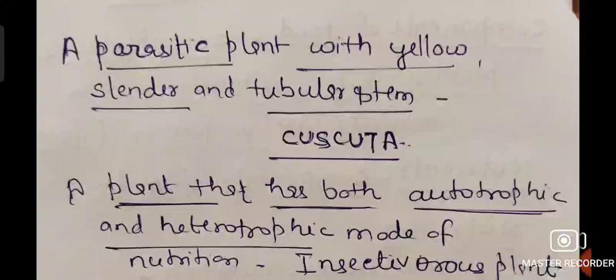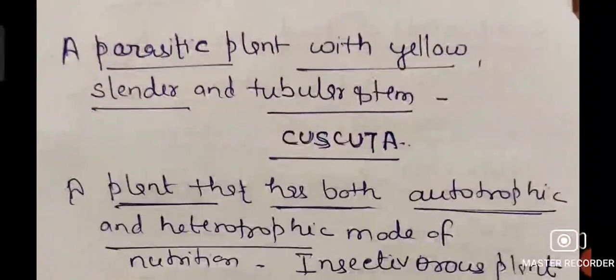This is a parasitic plant with yellow slender and tubular stem called Cuscuta. This is a parasitic plant with yellow color.